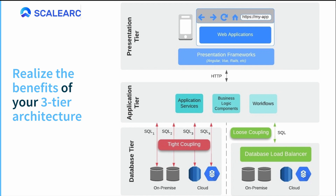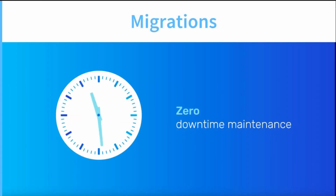Direct SQL connections make these migrations a lot more challenging, and they add to the risk level. The loose coupling that ScaleArc introduces allows you to fill out a migration form in ScaleArc, set your schedule, and benefit from the results as you seamlessly switch your apps over to your target database.